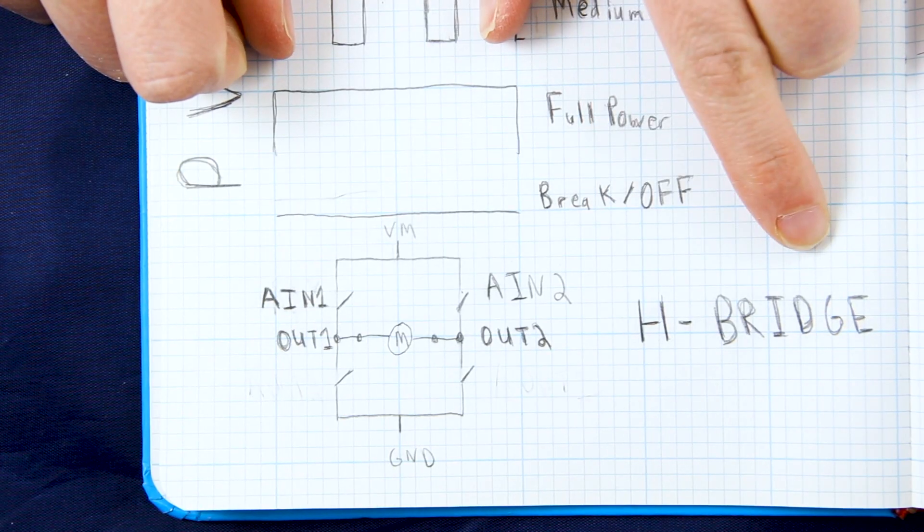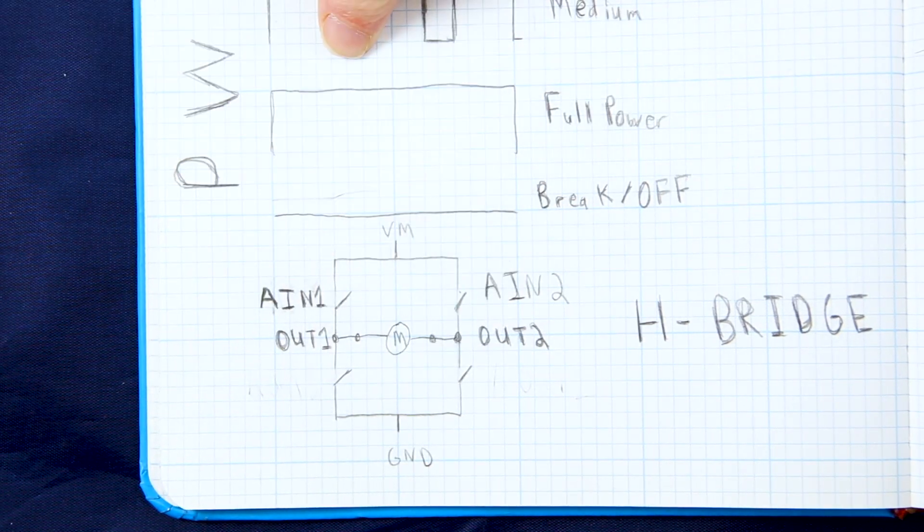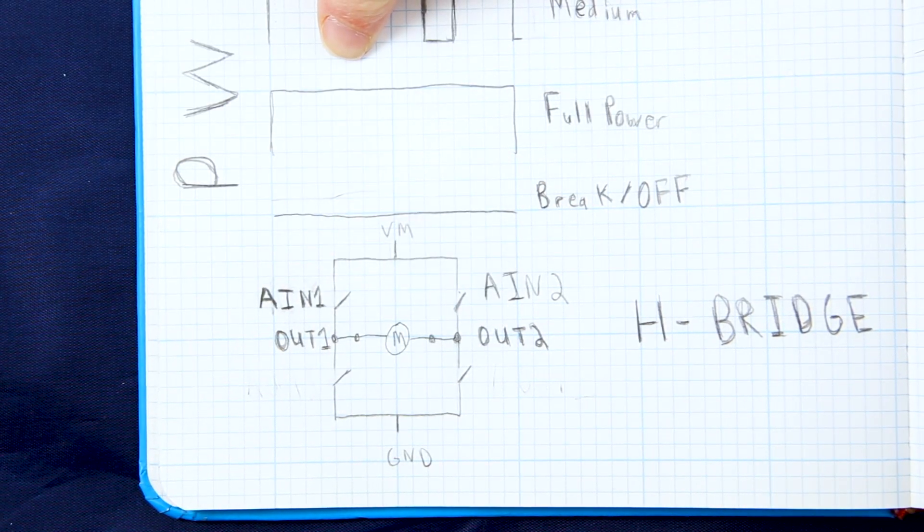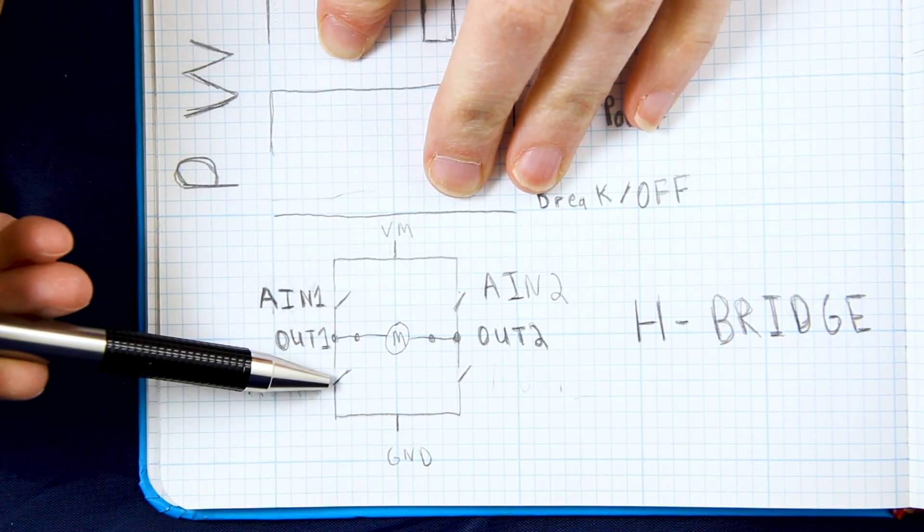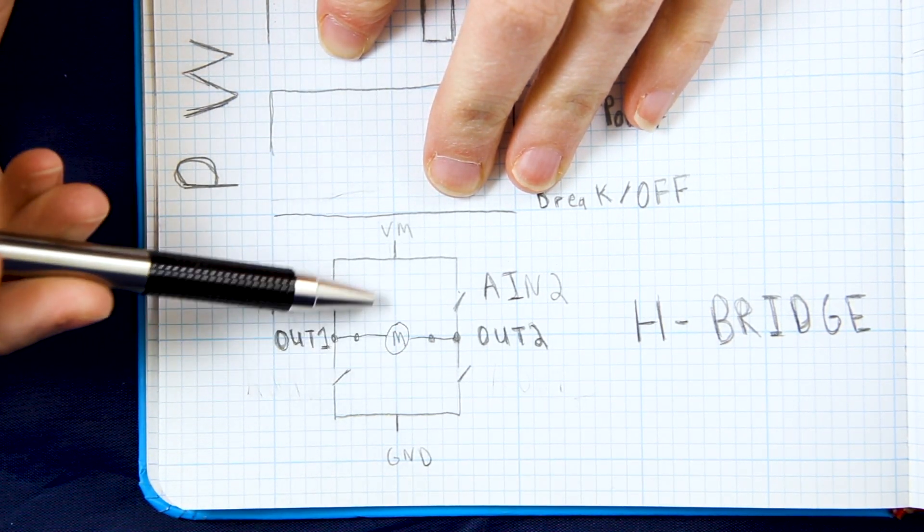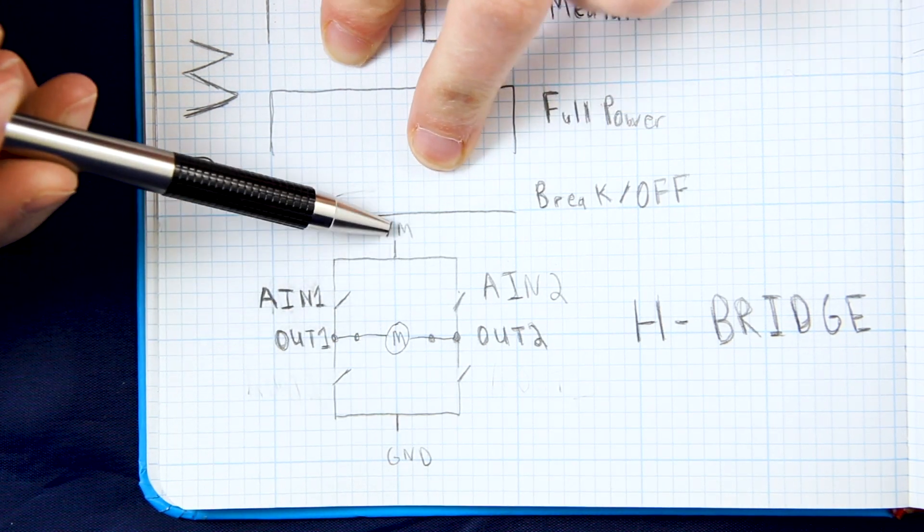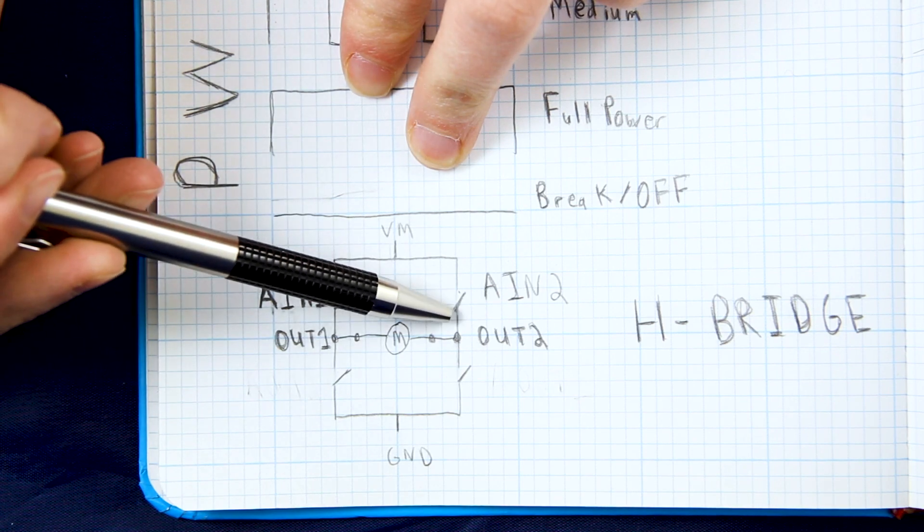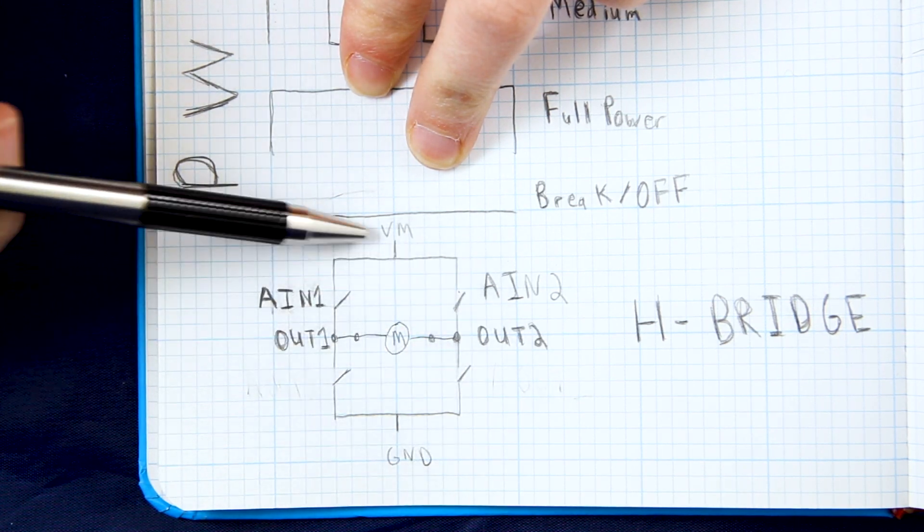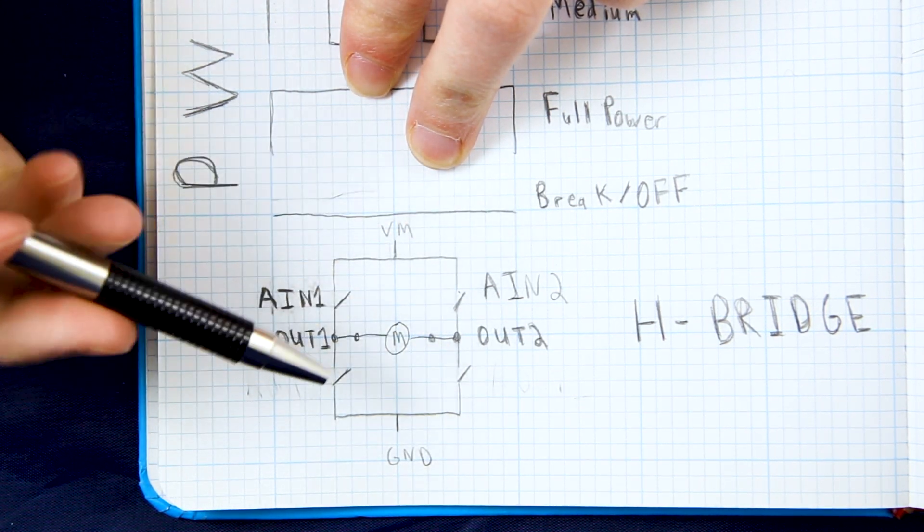For that we're going to use an H bridge and this is a very simplified version of the H bridge. It's missing a lot of components but for the basic idea of how it works we'll just look at it with four switches and this M in the middle is for our motor. So we have a voltage in right here, this is our motor voltage and a ground. And right now the switches are all open which means we have an open circuit and nothing is going through.